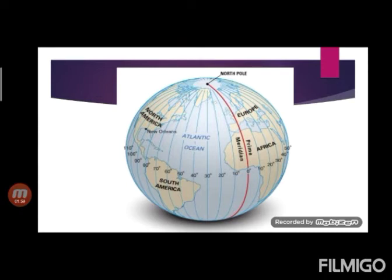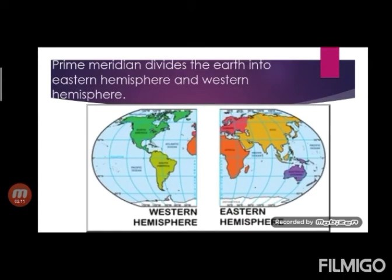Likewise, 180 degree longitude is also a semi-circle that joins North Pole to South Pole. And this semi-circle completes the circle and divides the Earth into two parts, that is Eastern Hemisphere and the other one is Western Hemisphere. East to Prime Meridian is considered as Eastern Hemisphere and West to Prime Meridian is considered as Western Hemisphere.